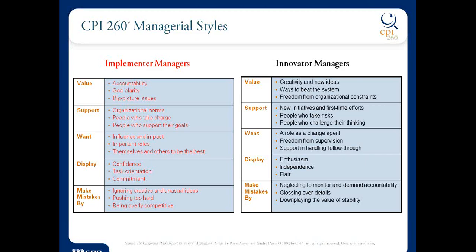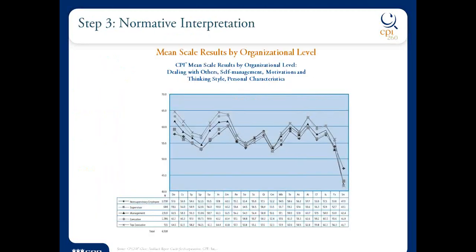We start with that type and the level. He came out as implementer level seven, so we'll likely see many of those characteristics. Take a look at the next slide. This is a series of about 6,500 people in organizational settings. They've been collected at CPP through the website over a period of about two years.